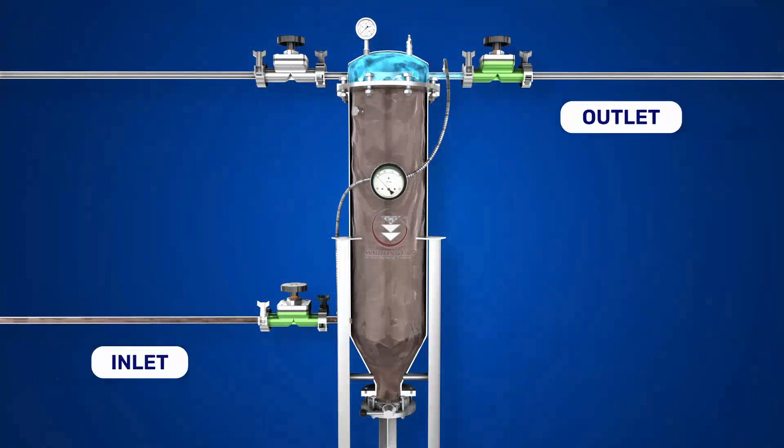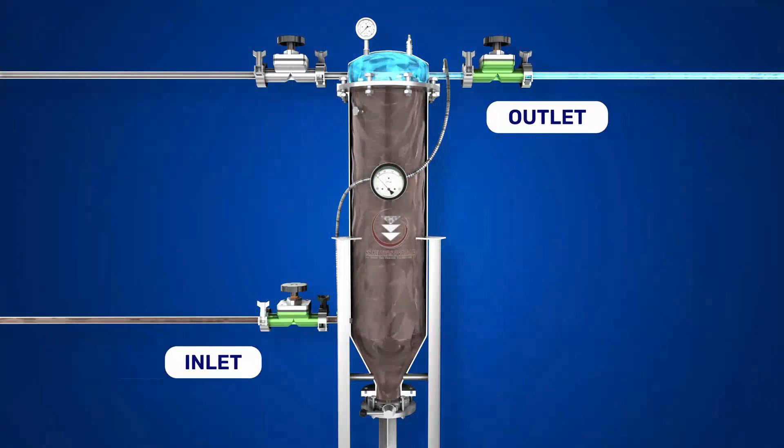Once the differential pressure reaches its set level or on completion of the batch, filtration is stopped by closing the inlet valve.